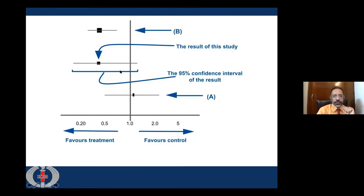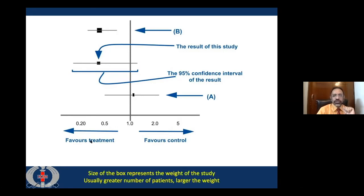Now we have added more studies, so we have three studies in this forest plot. Some studies have a bigger box and some have a smaller box. The size of the box actually represents the weight of the study, which usually comes from the number of patients or sample size, most of the time but not always. If the sample size is bigger, we will have a larger box; if smaller, then a smaller box. This weight is finally added up into the summary.